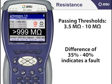Leakage resistance also provides an indication of how well the pair is balanced, which represents the electrical similarity of the tip and ring conductors and the ability of the pair to reject noise. Generally, a difference in reading greater than about 35 to 40% between tip to ground and ring to ground should be considered a fault condition and should be cleared.